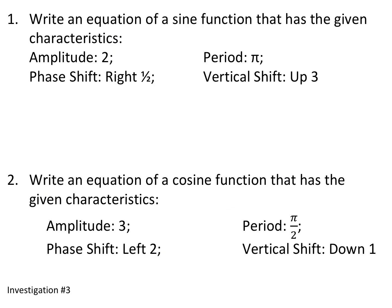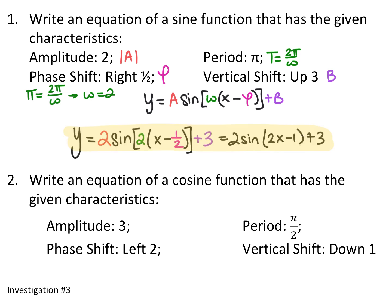We can reverse the process: given amplitude, phase shift, period, and vertical shift, we can write the function. For a sine function with amplitude 2, phase shift right 1/2, period π, and vertical shift up 3: the basic form is y = A sin[ω(x - φ)] + B. Since the period is π = 2π/ω, we get ω = 2. Filling in all values: y = 2sin[2(x - 1/2)] + 3, or y = 2sin(2x - 1) + 3.